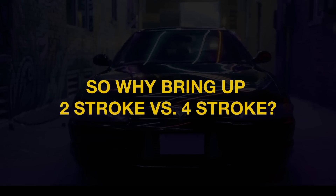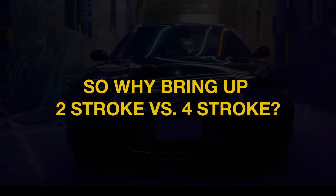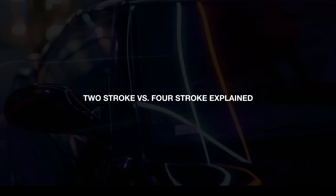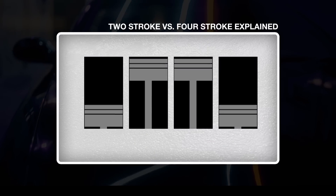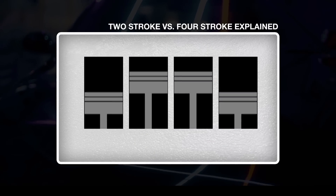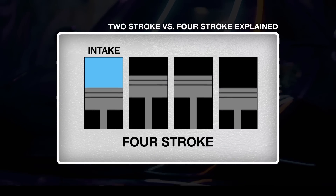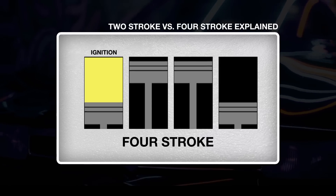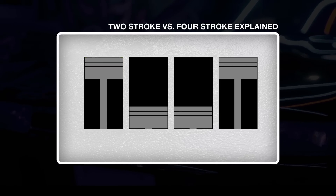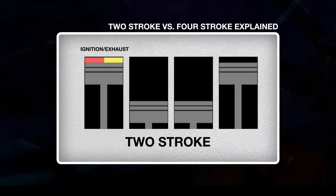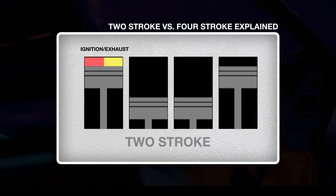So why did I bring up two stroke and four stroke engines? The reason is because the rotary draws a lot of comparisons to the two stroke, and a lot of people go as far as to say the rotary is a two stroke engine — when that is factually incorrect. A four stroke engine is your traditional engine you'll find in most cars. The pistons go through four separate strokes: an intake stroke, a compression stroke, an ignition stroke, and an exhaust stroke. Whereas in a two stroke engine, the intake and the compression are one event, and then the exhaust and ignition are one event.